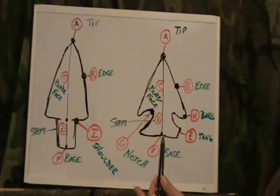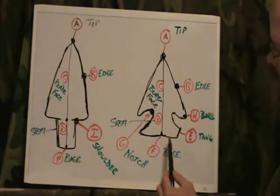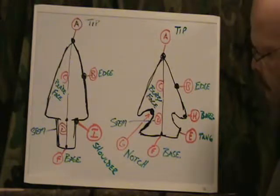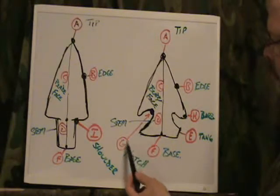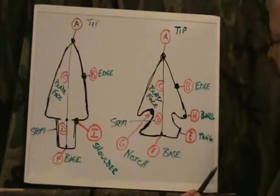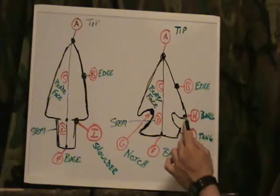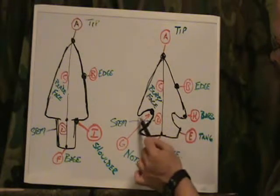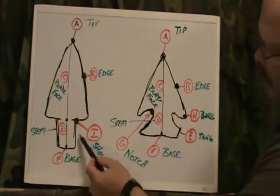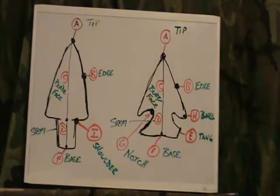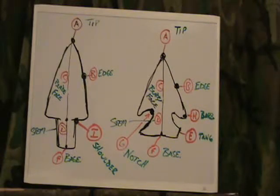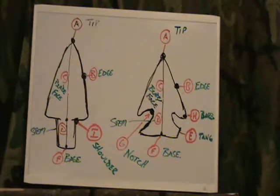I don't agree with calling it a tang, but it's the way I learned it. F is our base. G, right here, is our notch. H is going to be our barb. I is going to be our shoulder. That would be the nomenclature for your projectile points. You can apply it to every type of point out there — they're not all going to have the same amount of parts.